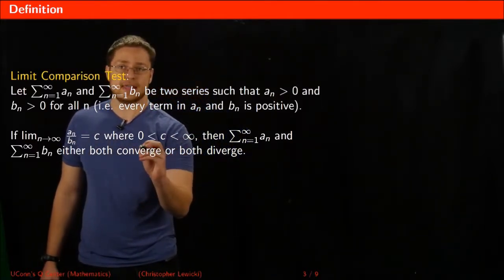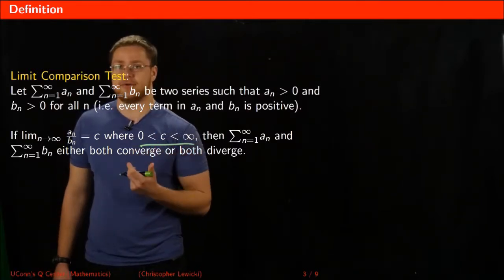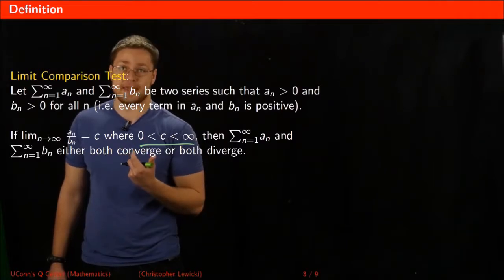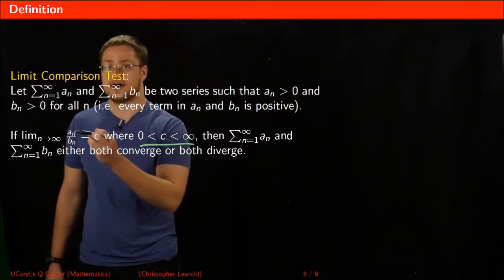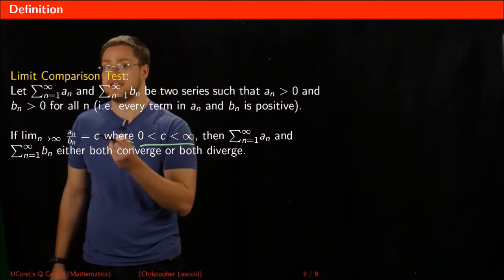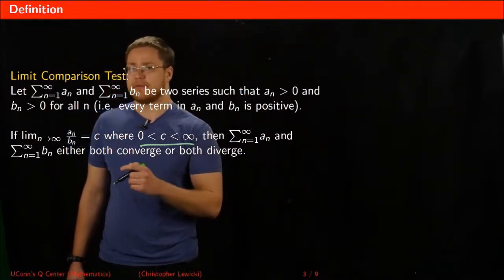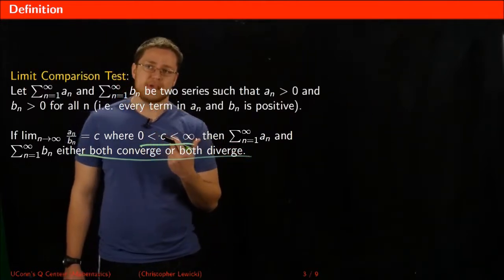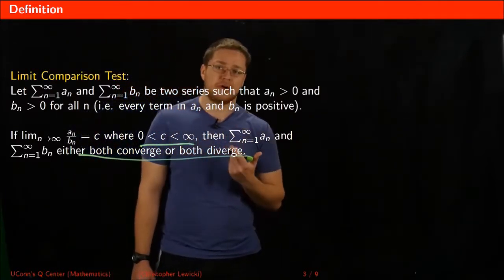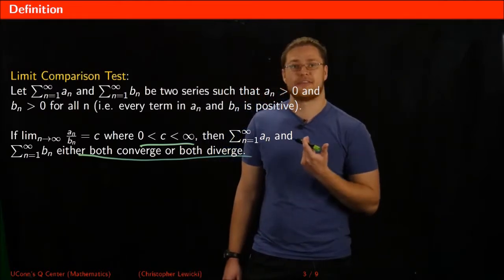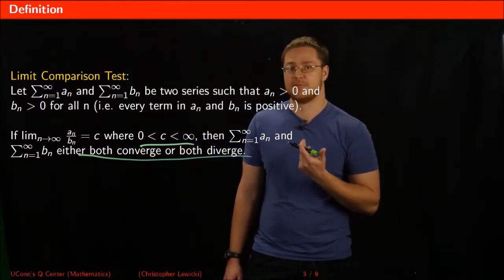This should make sense intuitively because if all of the terms in aₙ are positive and all of the terms in bₙ are positive, then a positive number divided by a positive number should yield a positive number. However, the conclusion that both series either converge or diverge might come off as complete randomness, so I'm going to prove to you why this is true.